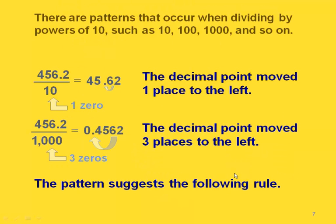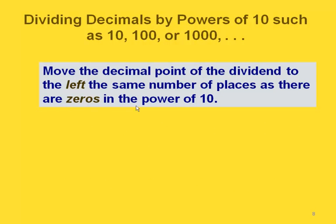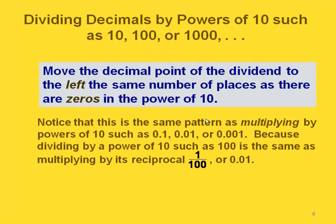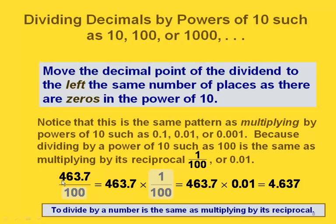We have patterns with powers of ten just like we did for multiplication. If we're dividing by a power of ten — like 10, 100, 1000, and so on — it moves our decimal point one place to the left per zero. One zero moves it one place to the left; three zeros moves it three places to the left. This is the same pattern as when multiplying by a power of ten smaller than one. For example, dividing by 100 is the same as multiplying by one hundredth, which moves the decimal point two places to the left.